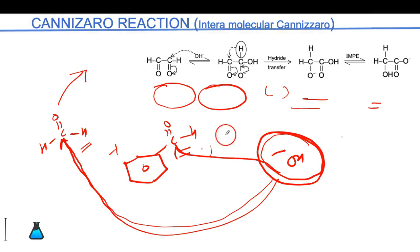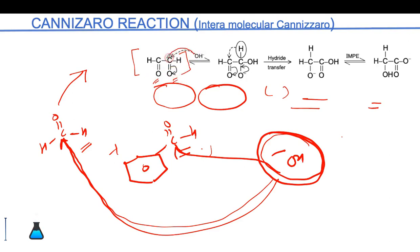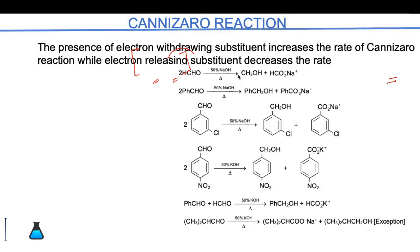In intramolecular Cannizzaro reaction, the molecule contains two different carbonyl groups. OH minus attacks one carbonyl carbon to form O minus, and the +R effect of this oxygen removes H minus, which then attacks the other carbonyl carbon intramolecularly. So Cannizzaro is of three types: simple, cross, and intramolecular Cannizzaro reactions.